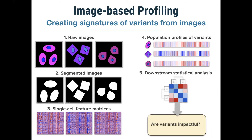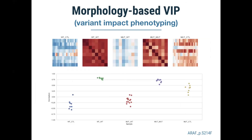Here is one example of a specific allele: we have the wild-type gene with replicate matrices showing N-by-N similarities, where red means high connectivity between replicates and blue means low connectivity. The wild-type phenotype as observed in images is very consistent across replicates, as is the mutant allele. However, when we look at the cross-correlation between the mutant and the wild-type, we see low connectivity — basically low similarity between the cell morphologies — indicating the mutant has different activity from the wild-type and is likely an impactful mutation.